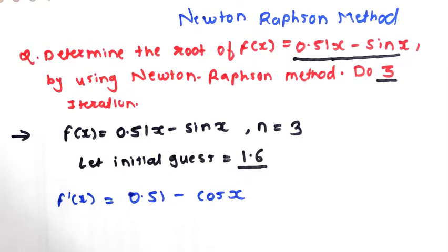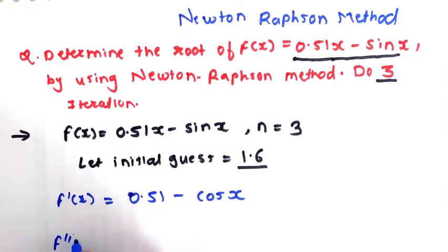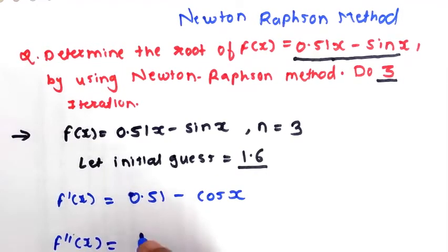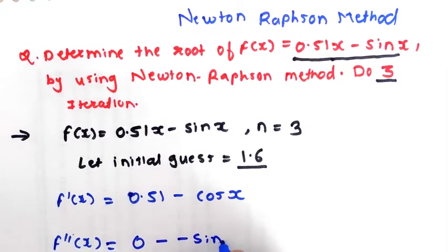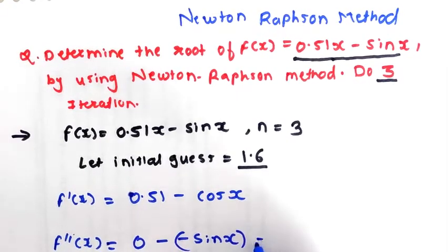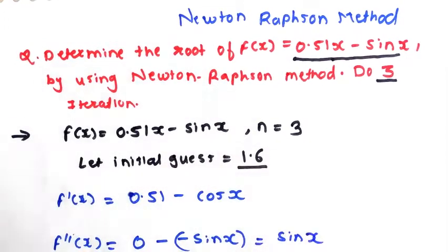Again differentiating with respect to x, we get f''(x). The derivative of 0.51 is 0, and the derivative of −cos(x) is sin(x), so f''(x) = sin(x).